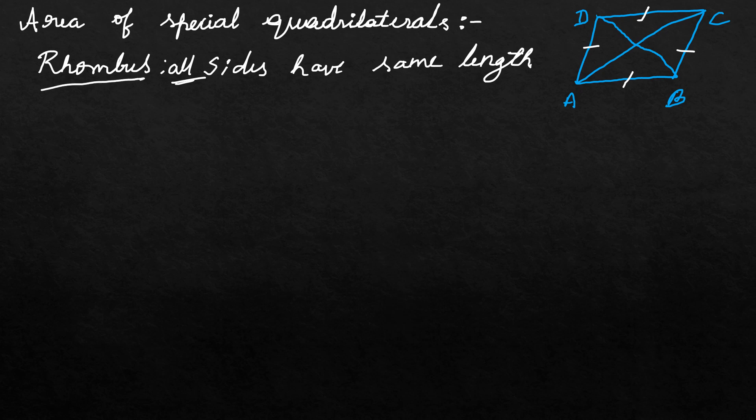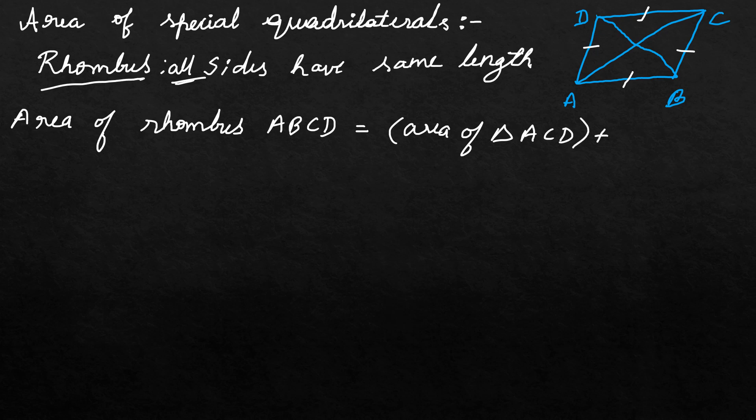Now just see the diagram. ABCD is a rhombus. Diagonals are AC and BD. Now let's find the area of this rhombus. Area of rhombus ABCD is equal to area of triangle ACD plus area of triangle ABC.